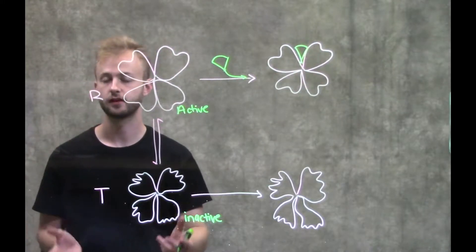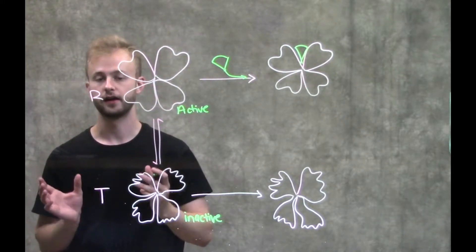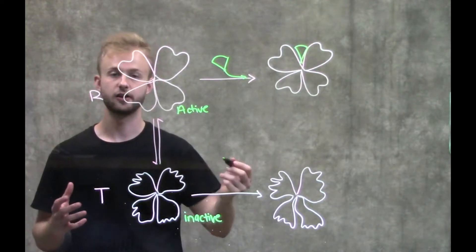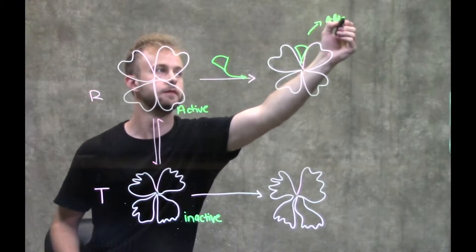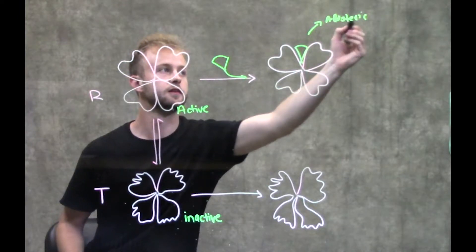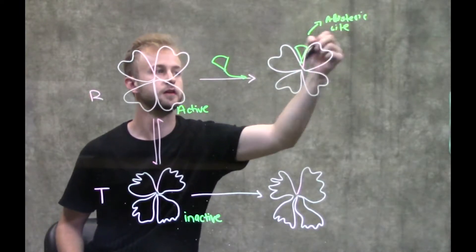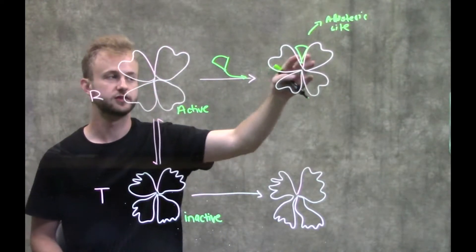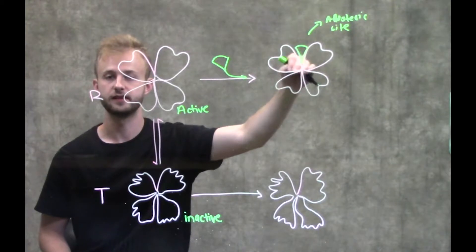Where it binds is going to be in a spot that's different than the active site. It'll bind in the allosteric site, which is where this is binding. What this activator will do is it will stabilize the active form of this enzyme.